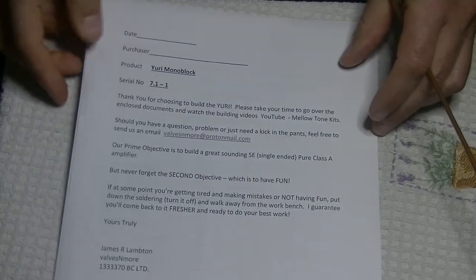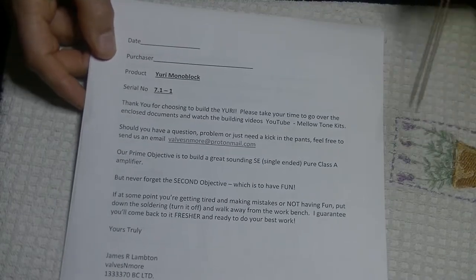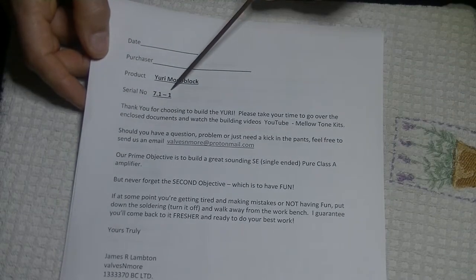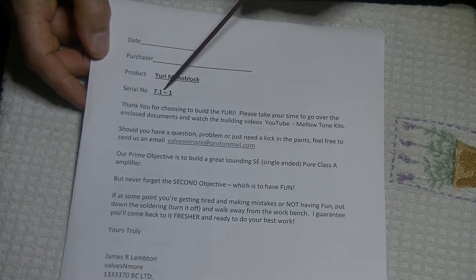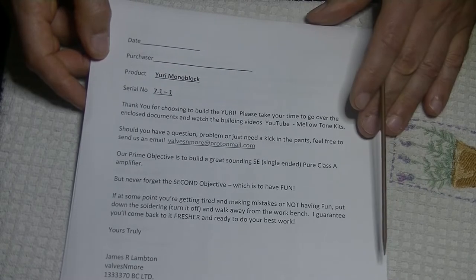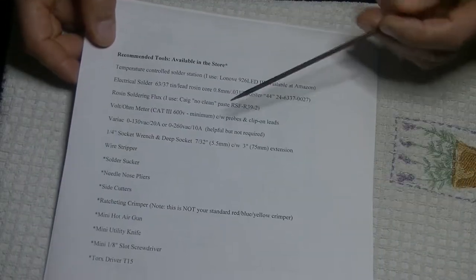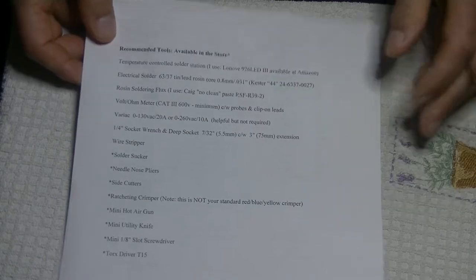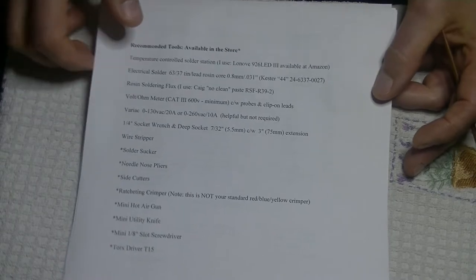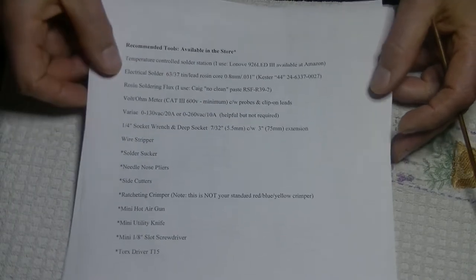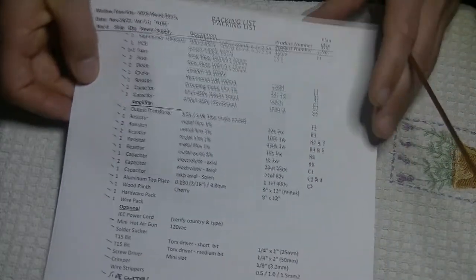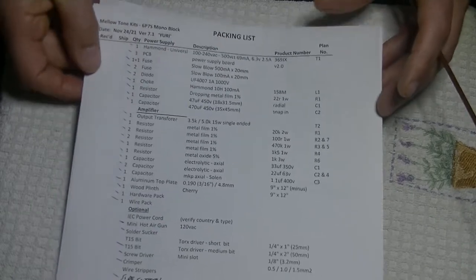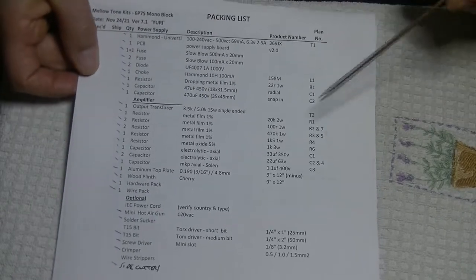First thing you're going to see is a big packet of paperwork. Let's just run through it really fast. I'm going to get a serial number, this is version 7.1, this is amp number one. I'm going to be building the first one. You're going to have a list of tools that are required. This is actually exactly what's on the website. Have a good look at it, make sure you've got what you need. A lot of the tools are in the store if you're short of something.